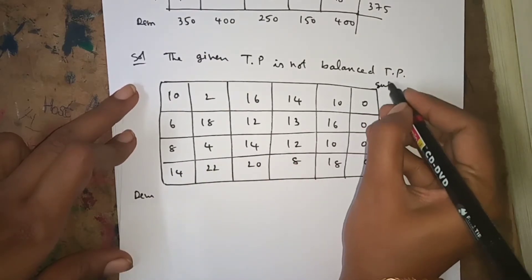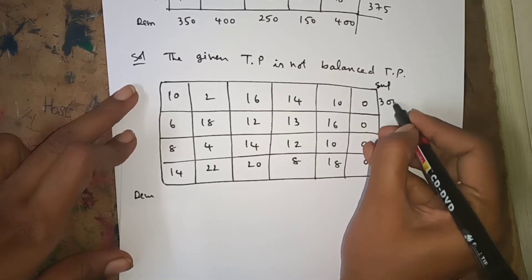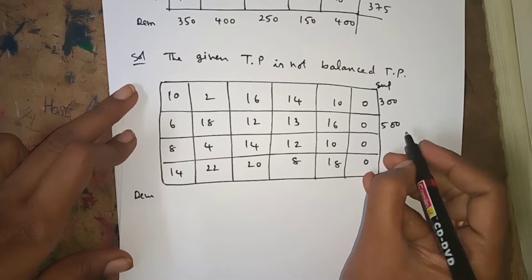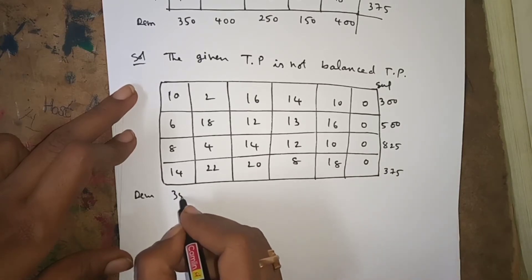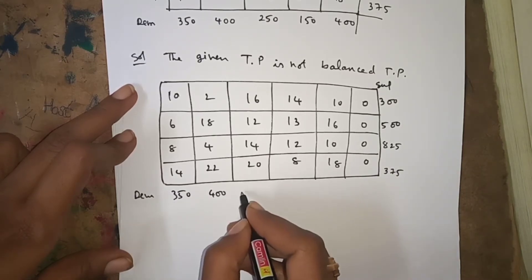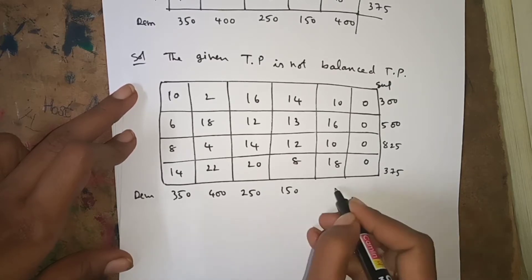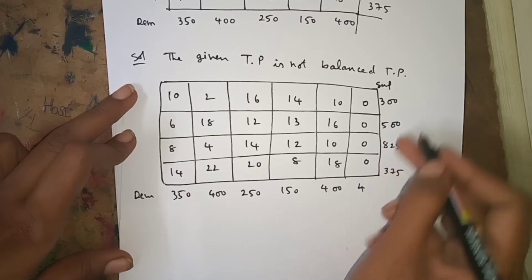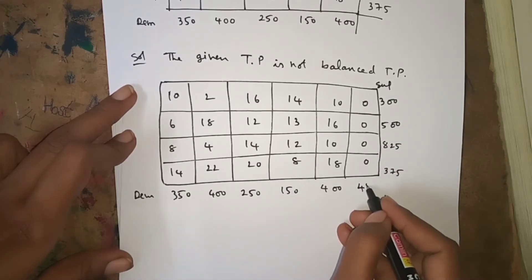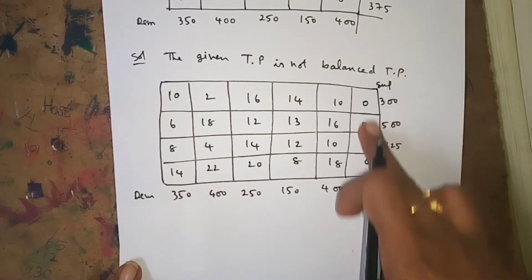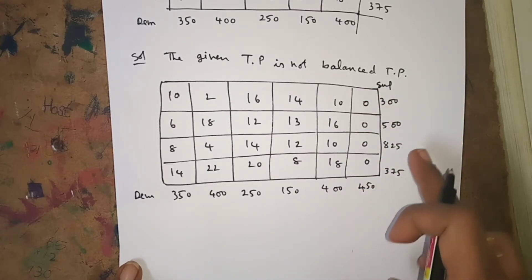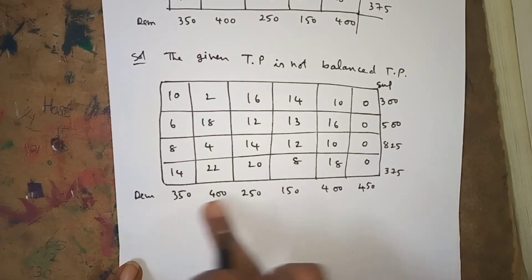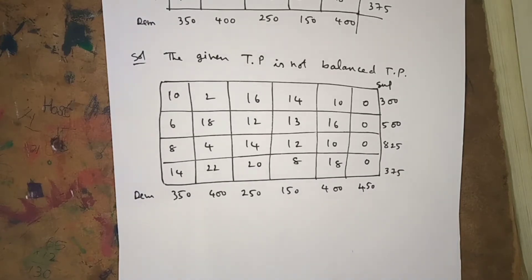We write the supply values: 300, 500, 825, 375. And the demand values: 350, 400, 250, 150, 400. The total demand is 1550 and total supply is 2000, which means demand is less than supply by 450. That's why I added one dummy column with all zeros and assigned 450 to it.